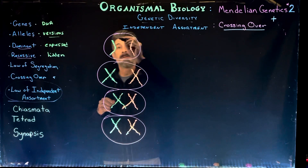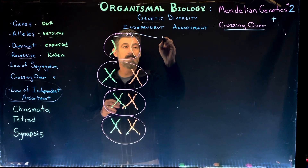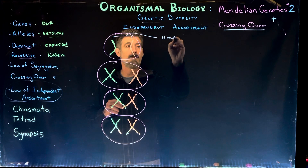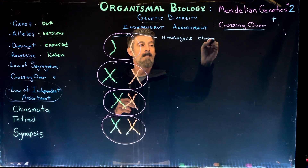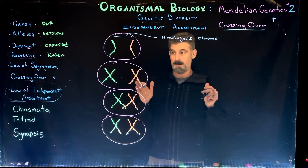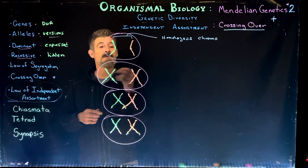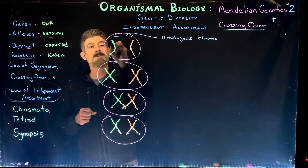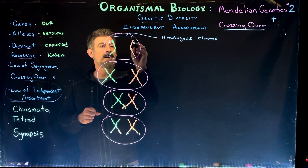Crossing over is where we have two homologous chromosomes — it's the same chromosome but with different versions of it. One was from the mother, one was from the father. Let's say we have a specific gene here and we'll give this gene A. Over here, this is capital A dominant and this is going to be little a recessive.